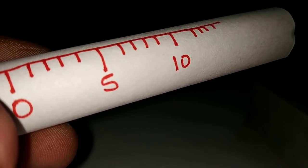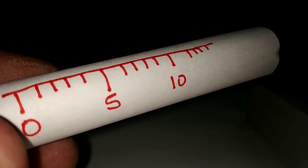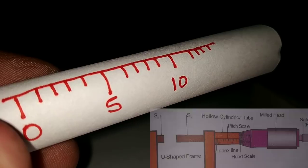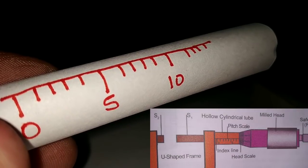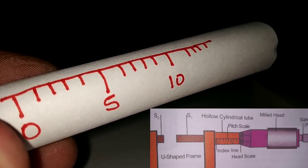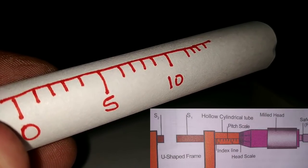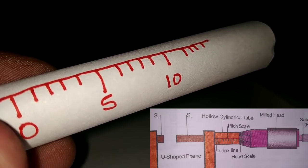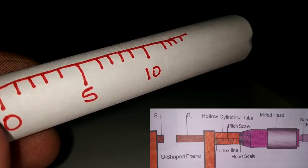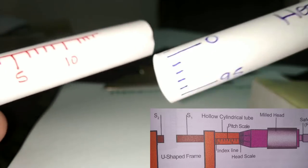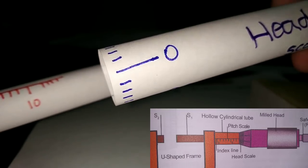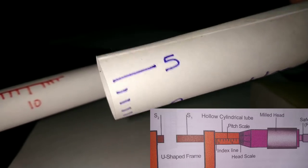The pitch scale is 0, 5, 10 — and this one is the good one. The pitch scale readings are 1mm, 2mm, 3mm, 4mm, 5mm. If you look at the head scale, it's like 0, 5, 10.